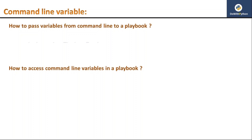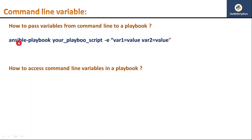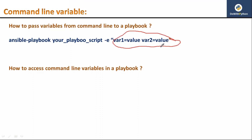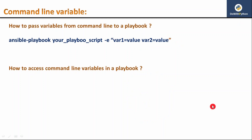It's very simple — to pass a variable from the command line to a playbook, just while running your script use the command 'ansible-playbook' followed by your script name, then with the option hyphen-e you can pass some variables with names and values. This is the way how to pass variables from the command line to your playbook, and whatever variables you pass, you can access them inside the playbook just like normal variables.